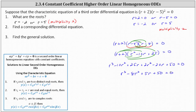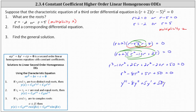Now we can use what we know about second-order constant coefficient, linear, homogeneous differential equations to determine a corresponding differential equation for our characteristic equation. Recall, when we have a degree two equation where the characteristic equation is ar squared plus br plus c equals zero, the corresponding differential equation is ay double prime plus by prime plus cy equals zero. Because our first term is r cubed, the corresponding differential equation is y triple prime minus eight y double prime plus five y prime plus 50y equals zero.